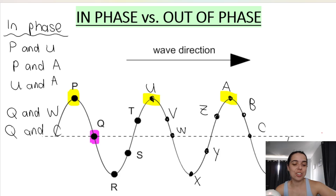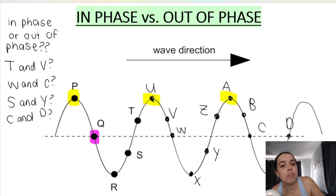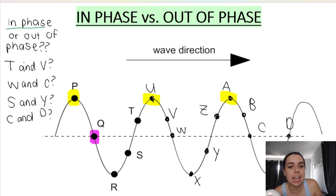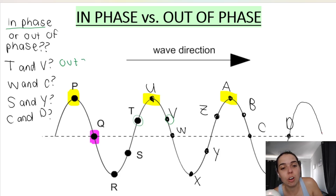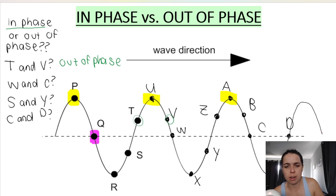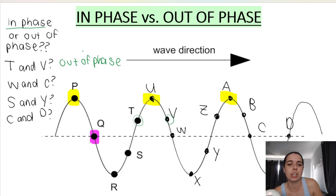Let me give you one more question. Are the following pairs of points in phase or out of phase? Let's start with T and V. Look at T and look at V — are they in phase or out of phase? I hope you said out of phase. Why? Because T is just before you're about to approach the crest, and V is just after you finish the crest. They're not on the same points on the wave — they're on opposite points of the little pulse.